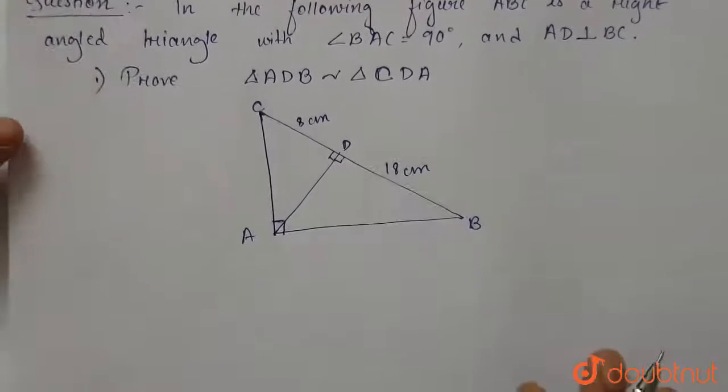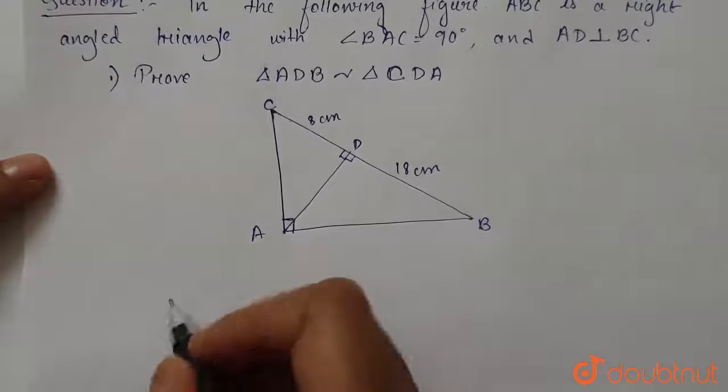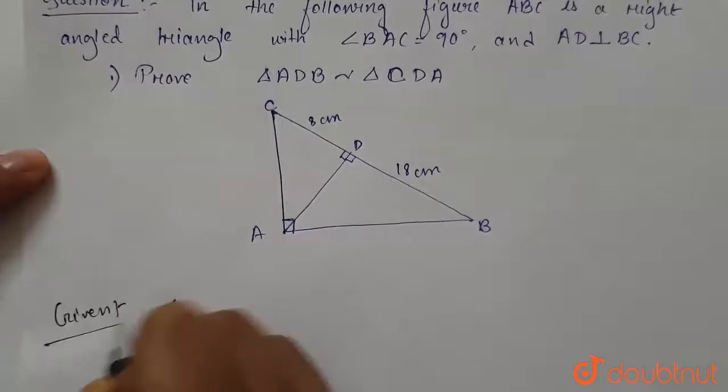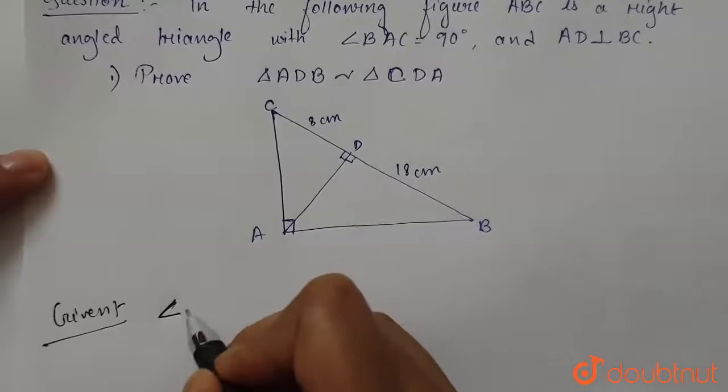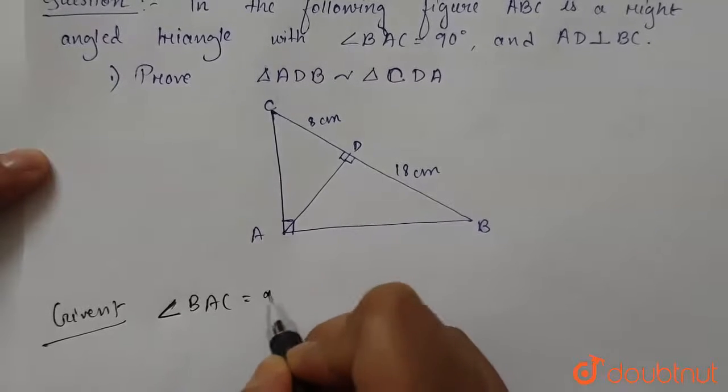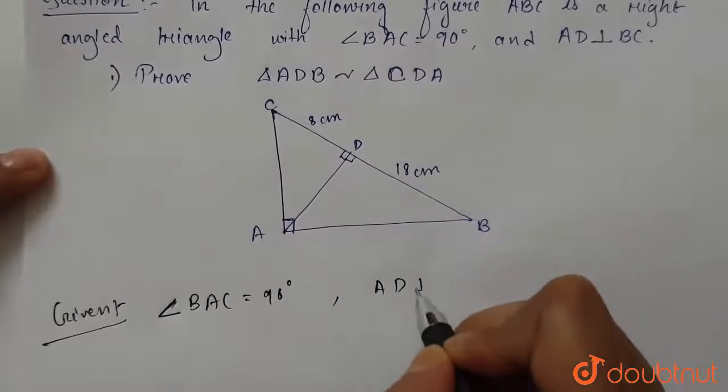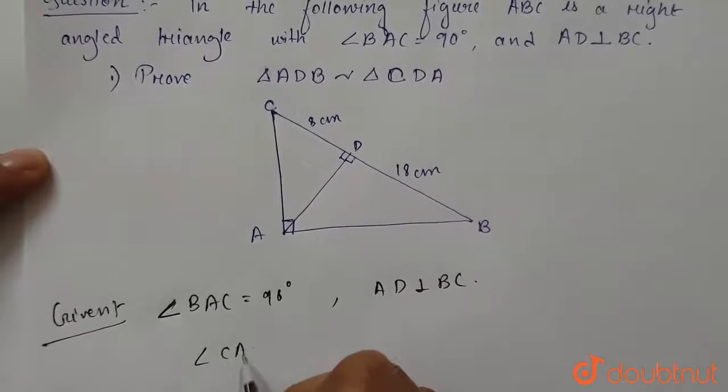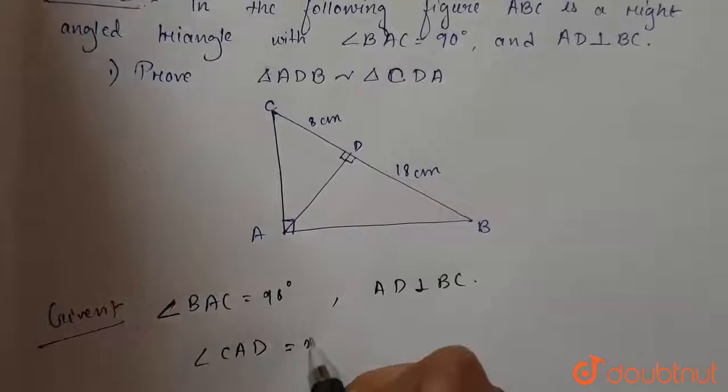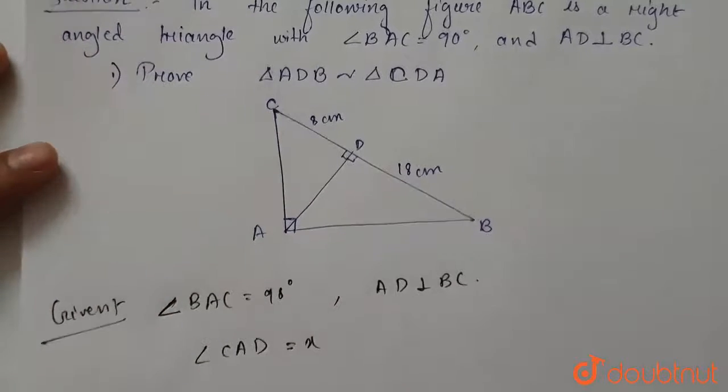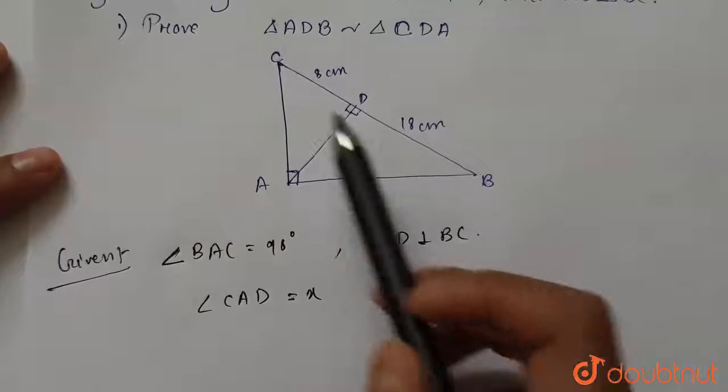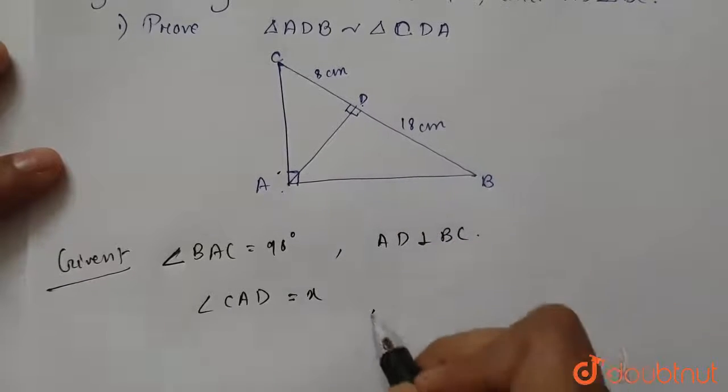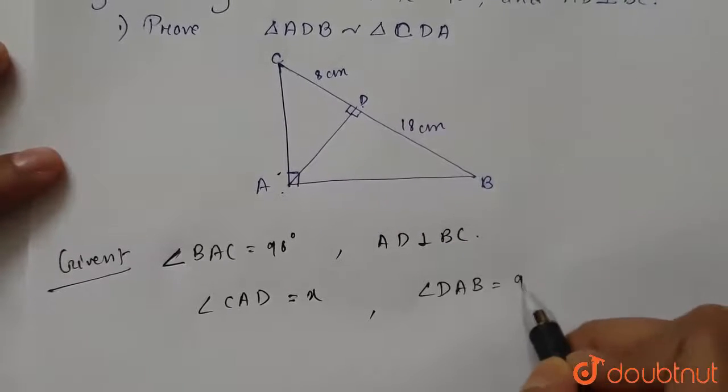Now, we are given angle BAC equals 90 degrees and AD perpendicular to BC. Let's take angle CAD equals X. So if we take angle CAD as X, then angle DAB will be equals to 90 minus X.